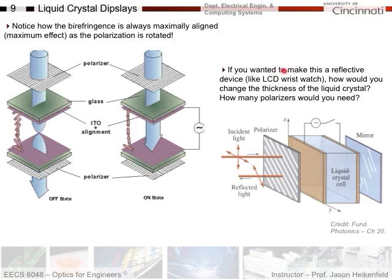For a reflective LCD, as used in wristwatches and calculators, only one polarizer is needed because light travels through the liquid crystal, reflects off a mirror, and passes back through the same polarizer. Because the light traverses the liquid crystal twice, the cell only needs to be a quarter wavelength thick — two passes of a quarter wave plate equal a half wave plate — making it thinner than a transmissive pixel.